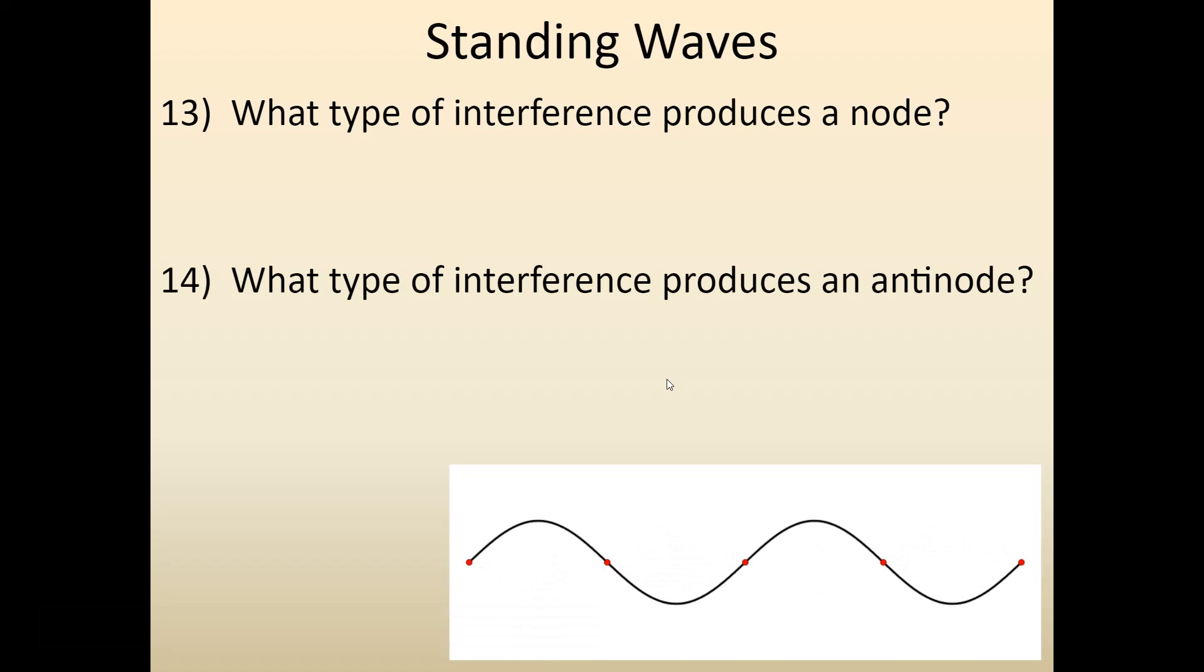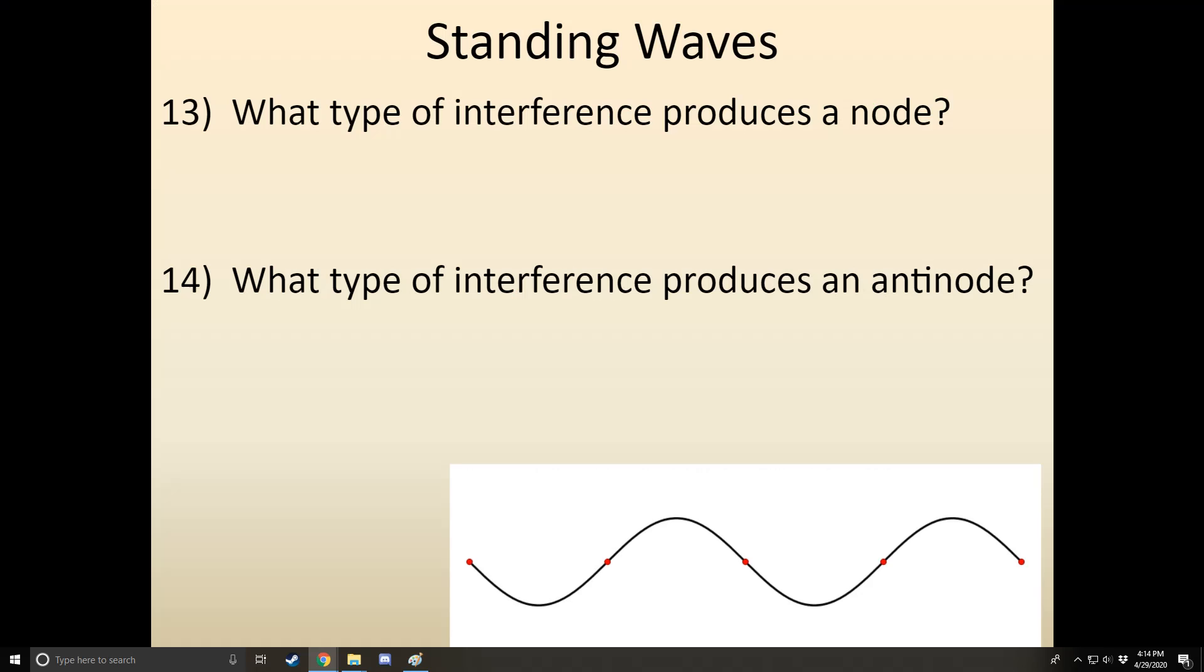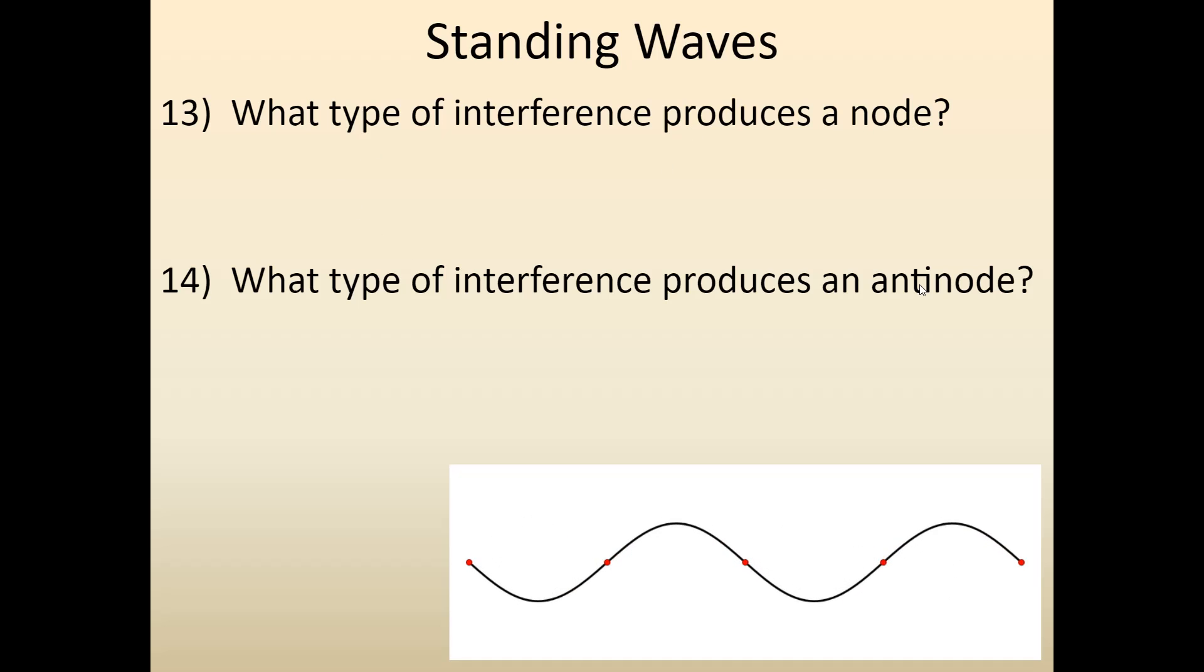So try to use that to answer these two questions. What produces a node? Well, if we go back to my little animation, this is a node. And if you look at the green and purple waves, it's always when the crest and the trough are meeting. So this would be destructive interference. So the node is being created by destructive interference. The antinode is created by constructive interference. For the antinode, it's where the two crests meet and when the two troughs meet. That is constructive interference. Anti-nodes are being created by constructive interference.